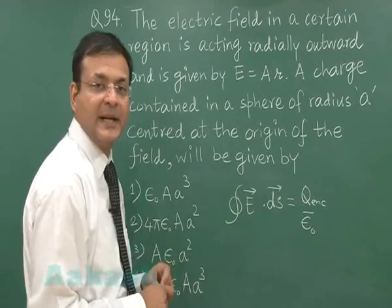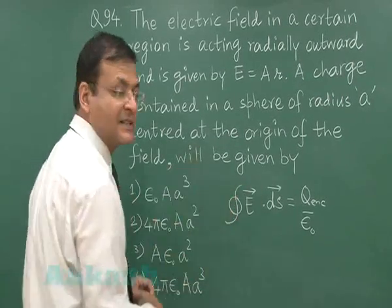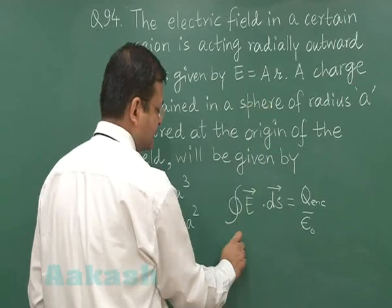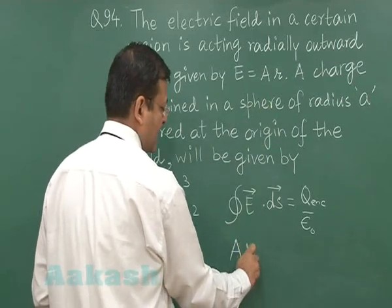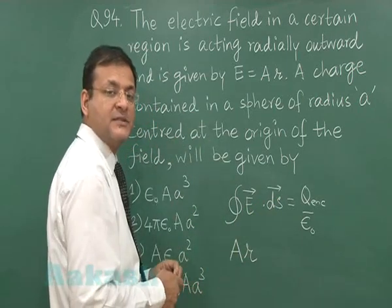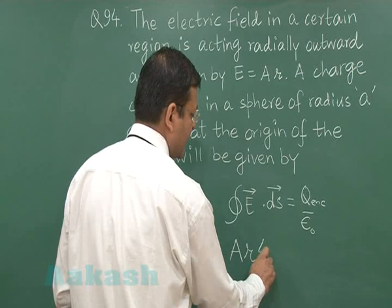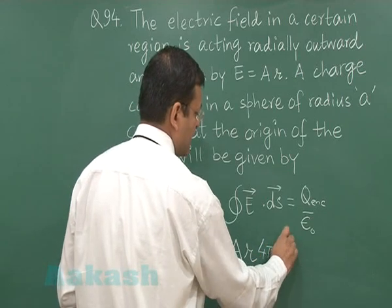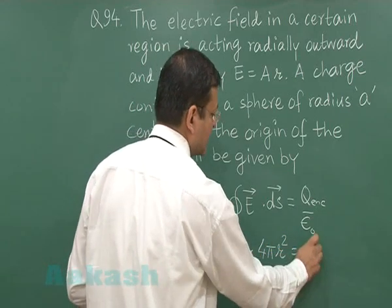So, angle will be taken to be 0. If you operate the left hand side, you will find electric field. You will write AR and this area will be the surface area of that sphere. That is 4 pi R square. This will be Q enclosed upon epsilon naught.